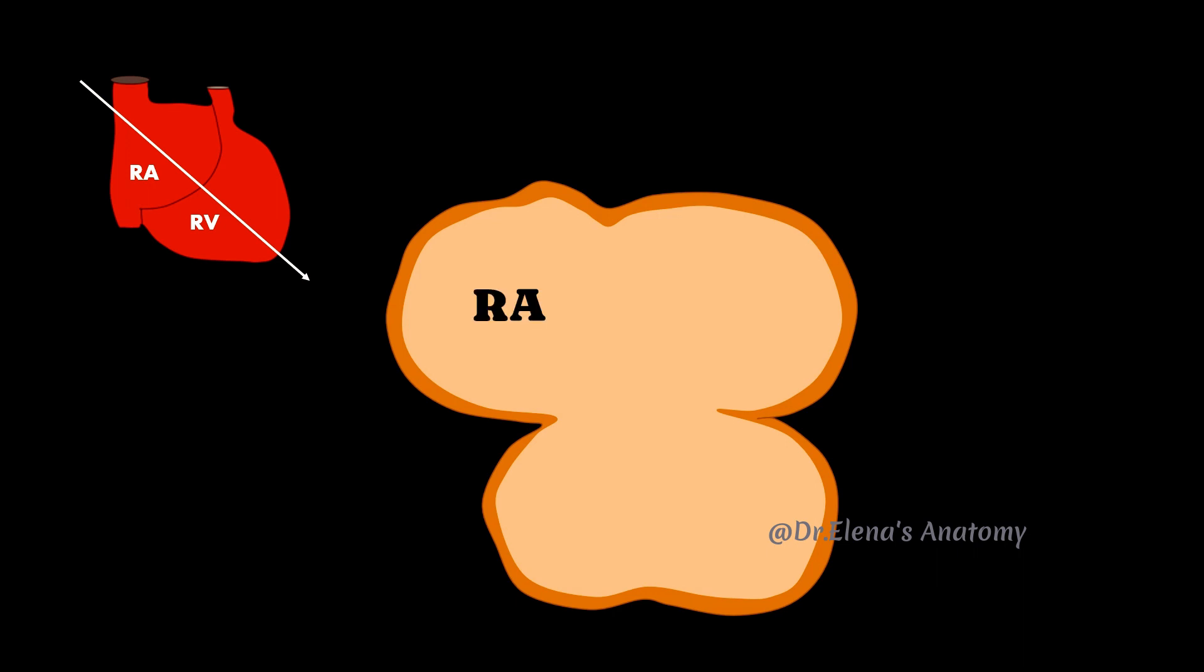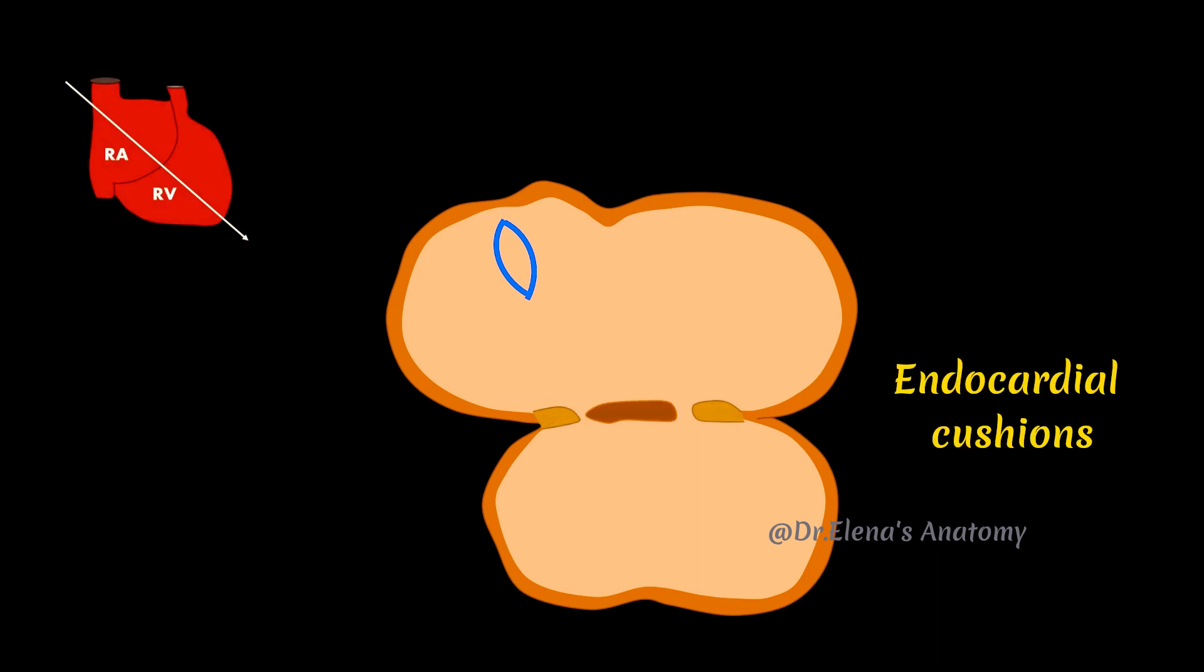Here is the right atrium, this is the left atrium, right and the left ventricles. This is a sinoatrial orifice and here we have the septum intermedium and these are the right and the left endocardial cushions.